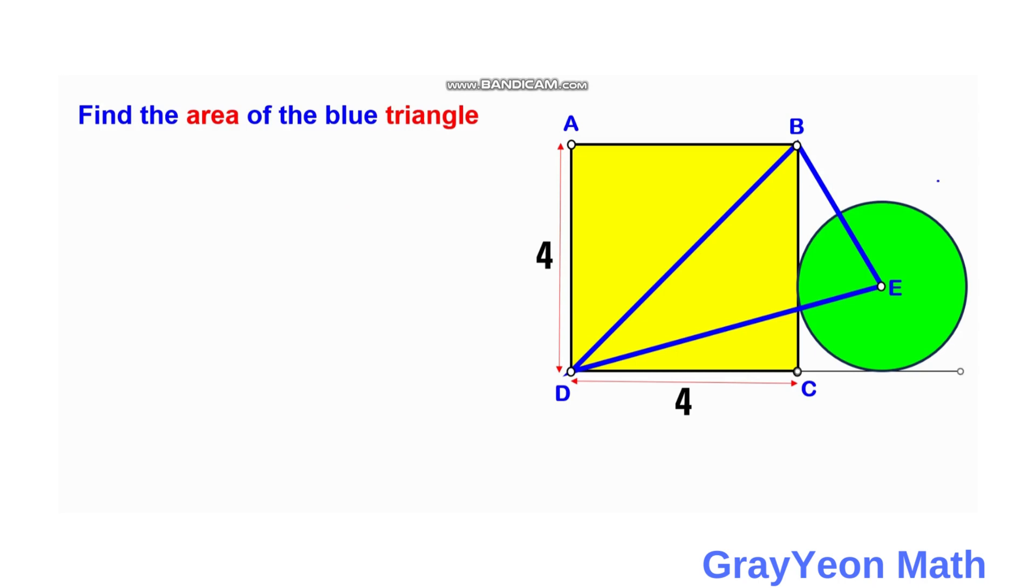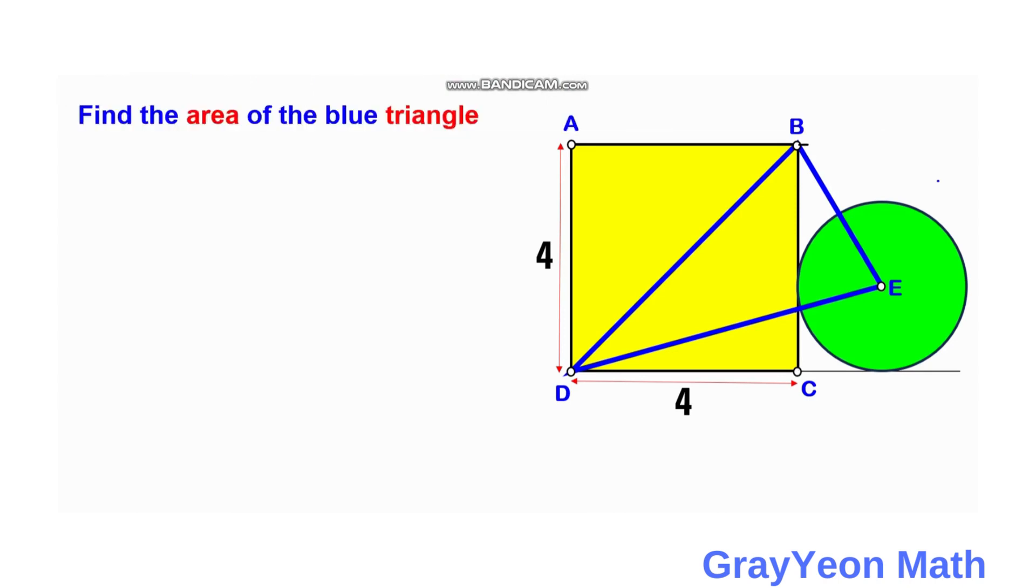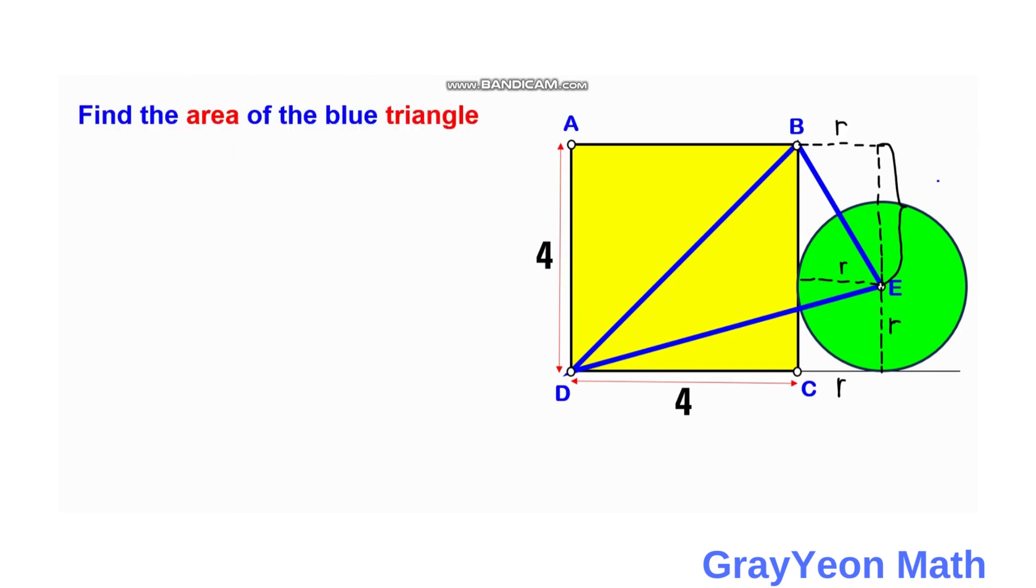So what we can do for this problem is that we can actually draw a line from this point B horizontally and downwards vertically to point E. And label this as R because it is corresponding to the radius of this green circle. And downwards from the center, this is R, and this is also R. And next we label this distance. Since the total is 4 for the square, so this will be 4 minus R.